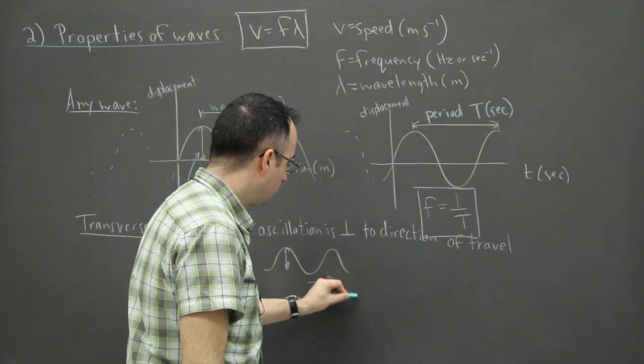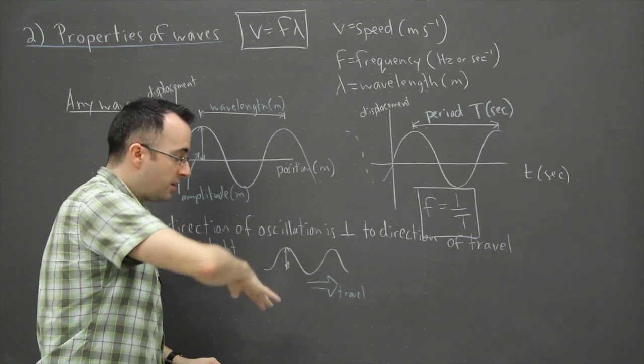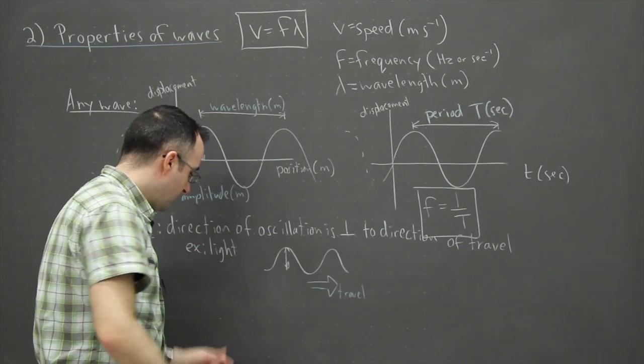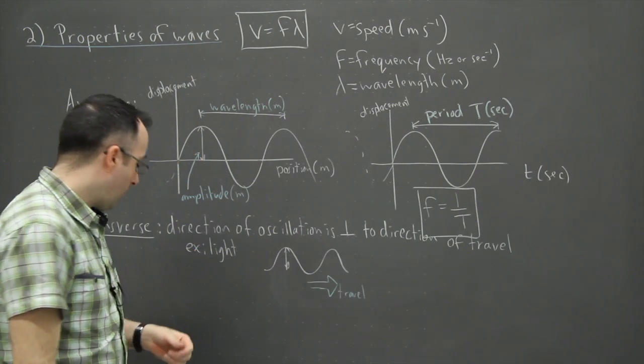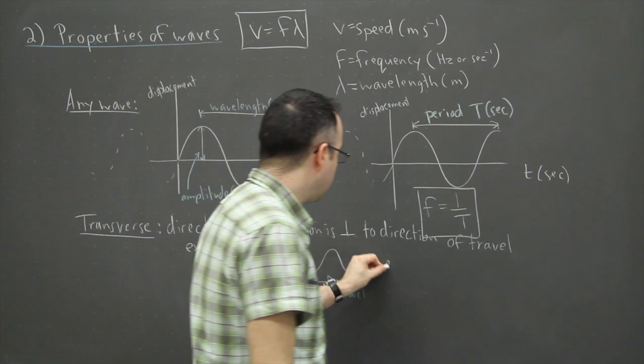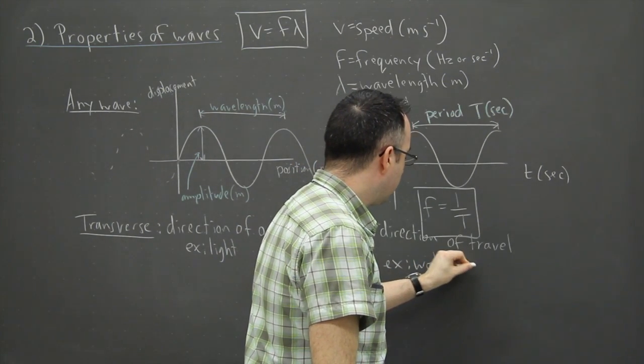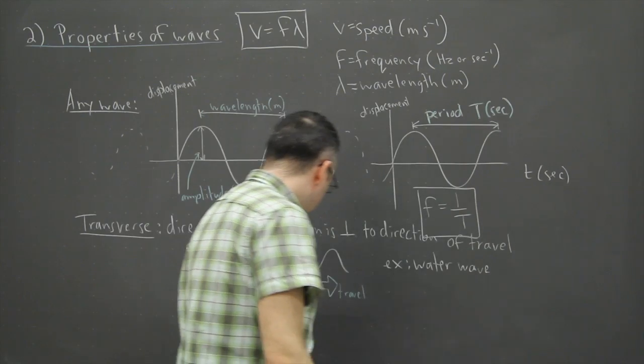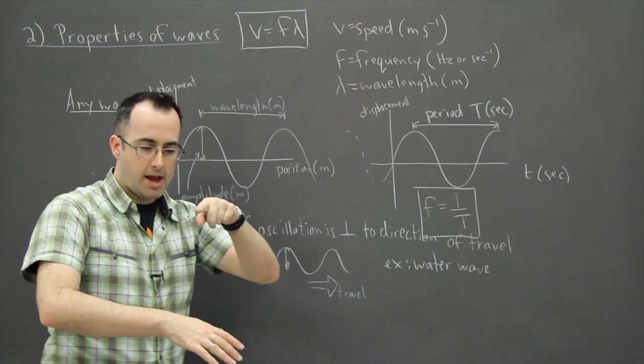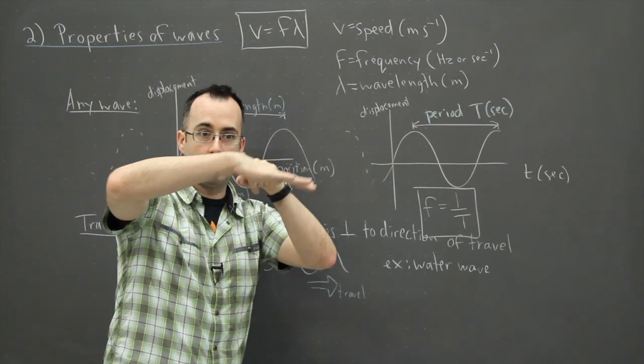Light travels this way and yet the oscillation is up and down. Another example could be a water wave. If you imagine a wave of water coming by, you can imagine yourself sitting in the water.